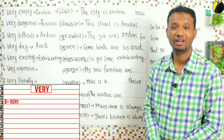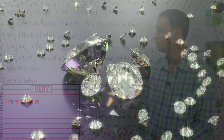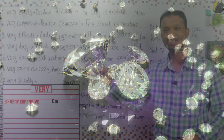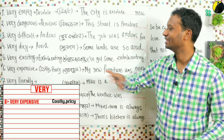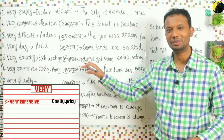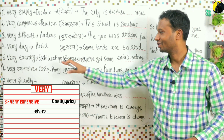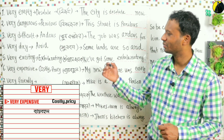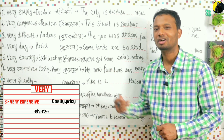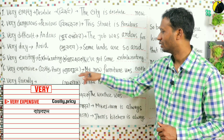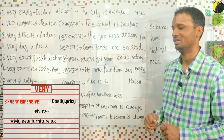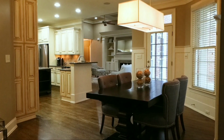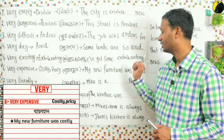Number six: very expensive. The advanced synonym is: costly or pricey. Believe me, native speakers use 'costly' or 'pricey' — if you are in London, it's very rare to hear 'very expensive'. You can hear 'it's costly' or 'it's pricey' in natural conversation. For example: 'My new furniture was costly' or 'pricey.'